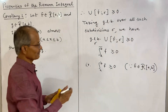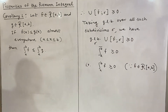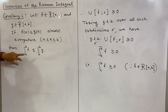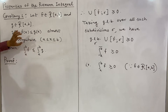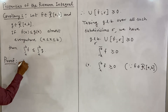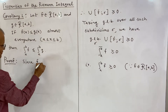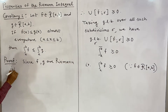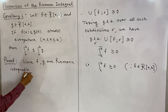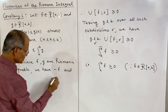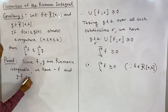The lemma says that if f ≥ 0, then the integral of f is ≥ 0. For the proof: f is Riemann integrable and g is Riemann integrable, and f ≤ g. Therefore, minus f is Riemann integrable and g minus f is also Riemann integrable, since f and g are Riemann integrable.